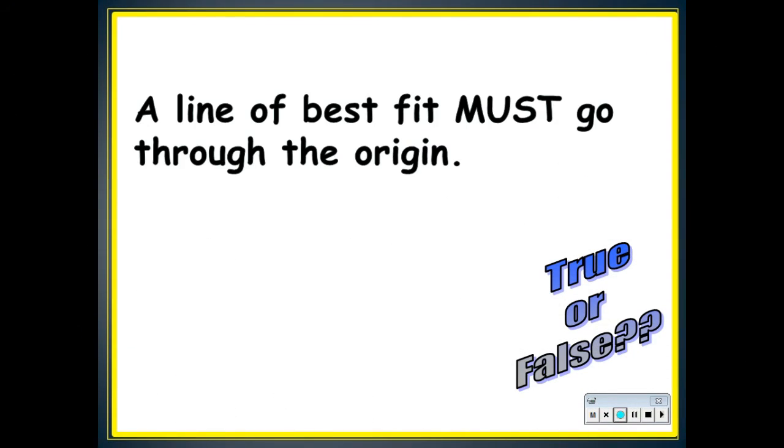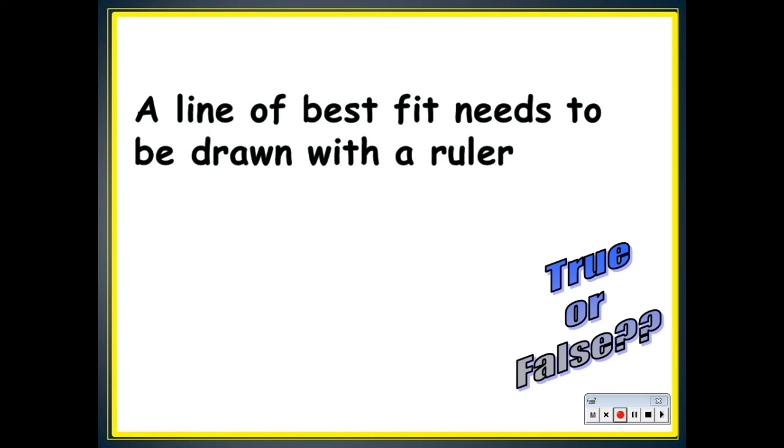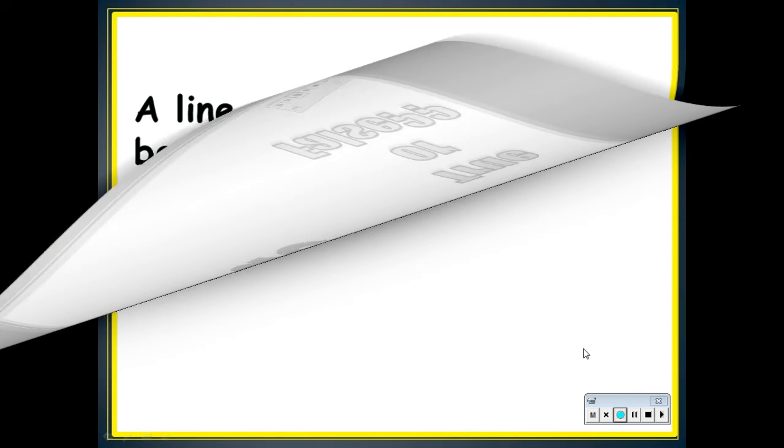A line of best fit must go through the origin. A line of best fit is a straight line. A line of best fit needs to be drawn with a ruler.